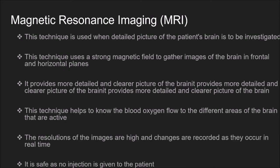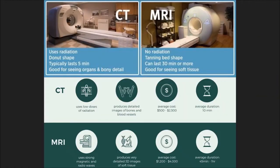Magnetic resonance imaging or MRI is used when a detailed picture of the patient's brain is to be investigated. This technique uses a strong magnetic field to gather images of the brain in frontal and horizontal planes. Unlike CT scan, it provides a more detailed and clearer picture. It helps to know the blood oxygen flow to different active brain areas, with high-resolution images recorded in real time. It is safe as no injection is given to the patient. Please pause and compare the CT scan and MRI scan images.